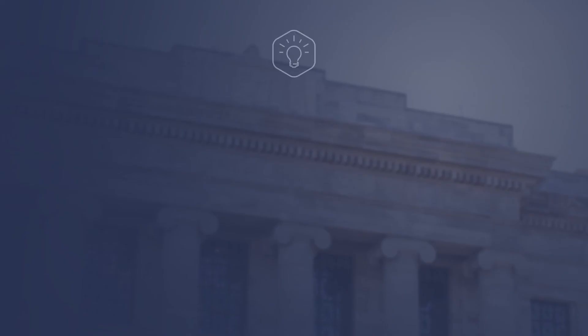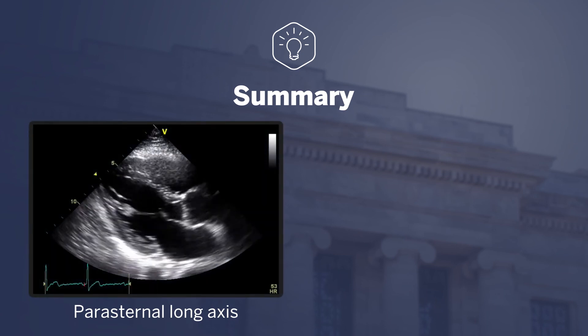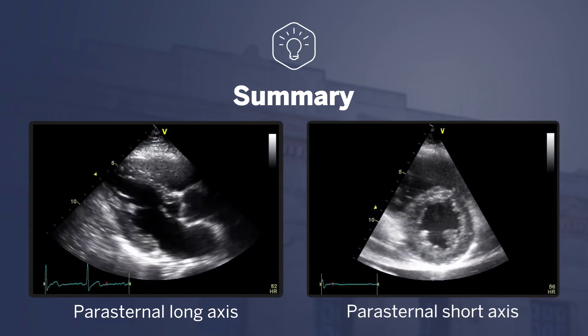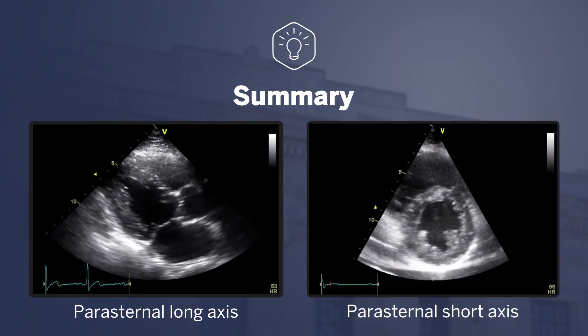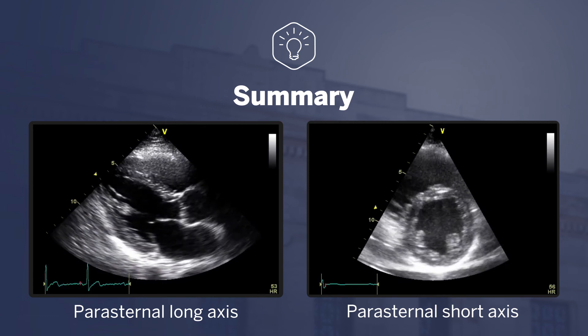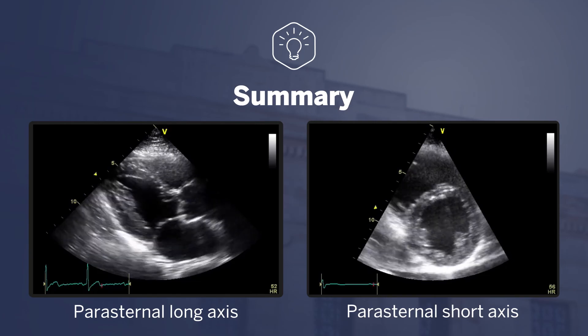That concludes our second lecture on basic cardiac point-of-care ultrasound. In summary, we went through the parasternal long and parasternal short axis views, discussing how to obtain these views, the relevant sonoanatomy, and how we may utilize the images obtained for patient care. Thank you for watching, and I hope you found this topic helpful.